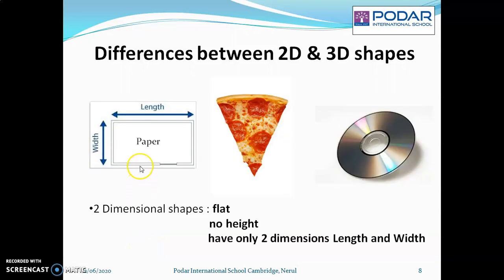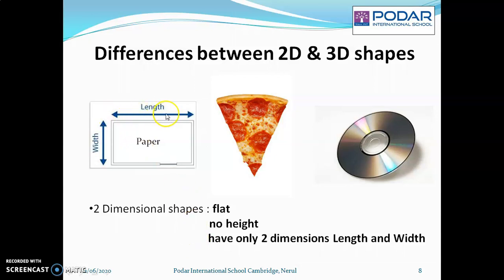Here you can see a paper, a pizza slice and the CD images. What is same here? They all are 2D shapes. Why? Because they are flat. They have no height. What does this mean? That means I cannot store anything inside this. And they have only two dimensions — the length and the width. The width is also called the breadth.